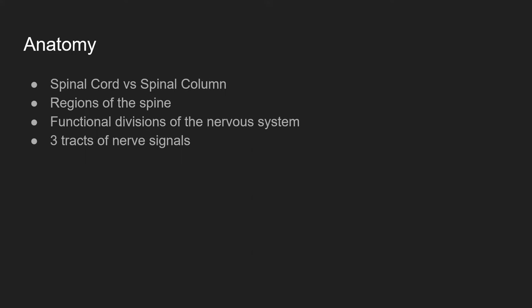Some of the things that we need to be cognizant about as we go through is knowing our anatomy. We're going to look at the spinal cord versus what the spinal column is, talk about the different regions of the spine, the functional divisions of the nervous system, and the three main tracks of nerve signals as they travel.